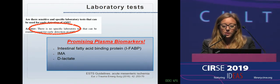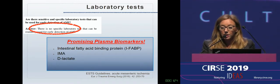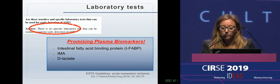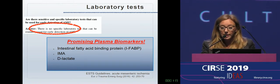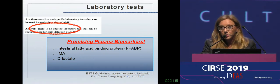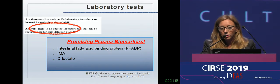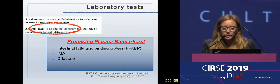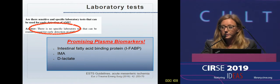Hopefully, some promising plasma biomarkers are on the way, like the intestinal fatty acid-binding protein, alpha-methylacyl-CoA racemase (AMA), and citrulline. All of these could be used in the future for the early diagnosis of AMI, as they seem to be sufficiently specific and sensitive, though more studies are required.